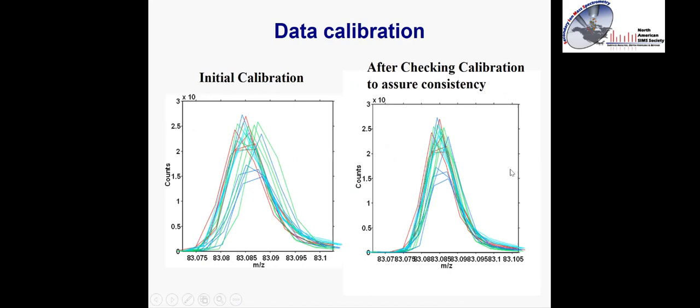Once you have data, it's important to calibrate it properly. All data for a given experiment should be calibrated with the same set of peaks, and you should always check your calibration. Shown here is a series of spectra before and after checking calibration — before, there's quite a shift between peaks that would indicate a second peak. After recalibration, everything overlaps on one single peak. This is important because when we get peak areas, we need to consistently integrate the area from just a single peak before putting it into the analysis.